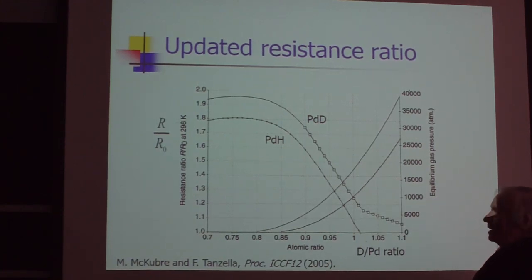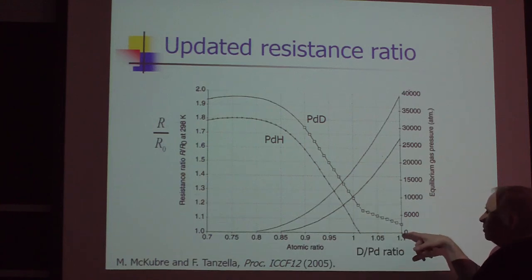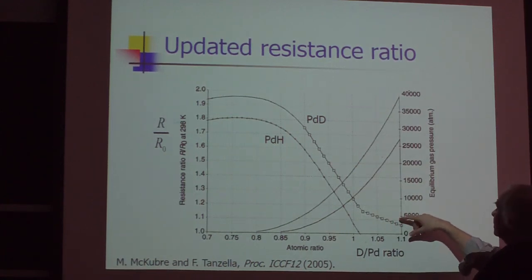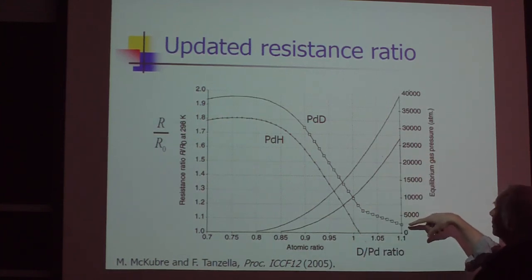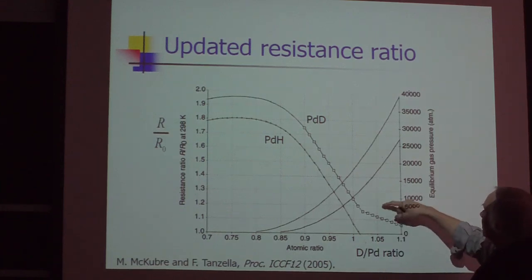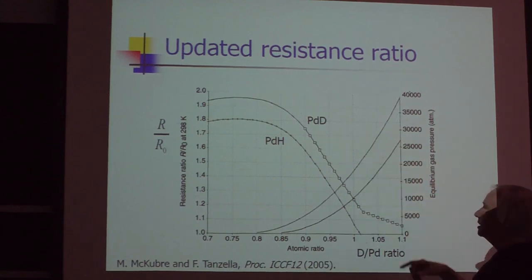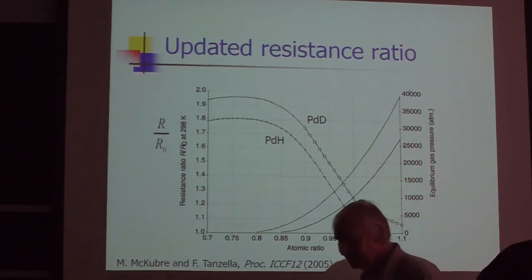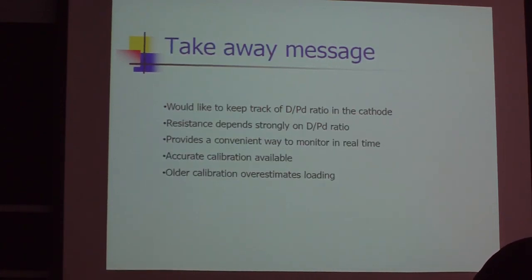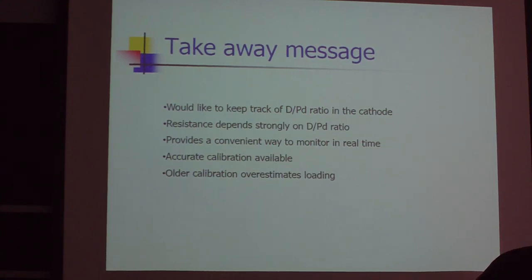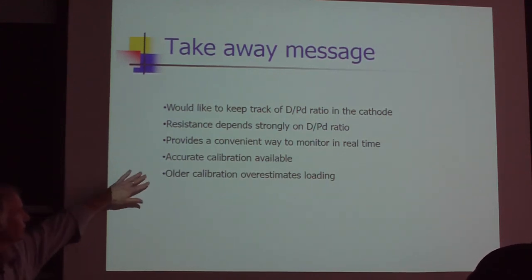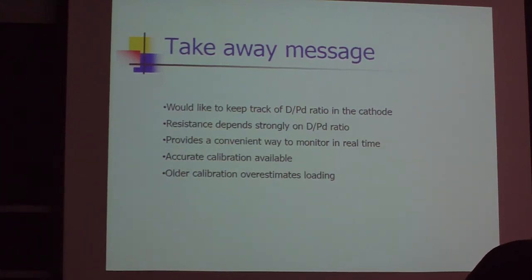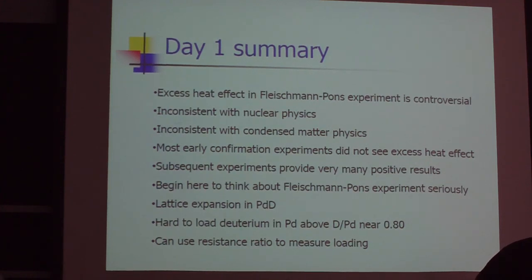Because these curves are so important, people have worked to get calibrations. Between 0.7 and 1.1, we have calibrations for both palladium hydride and deuteride. Here's the gas pressure associated with different curves, including Baranowski's 3 gigapascal data point. This gives a palladium deuteride curve versus resistance ratio. Takeaway: we want to track the D/Pd ratio. We now have an exquisite tool to do exactly that.